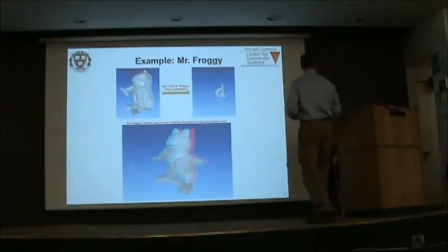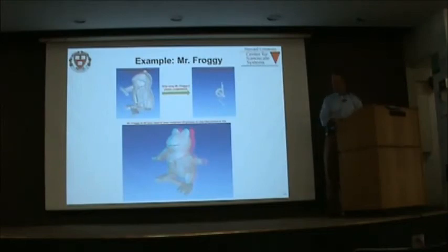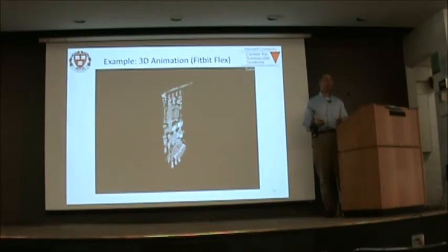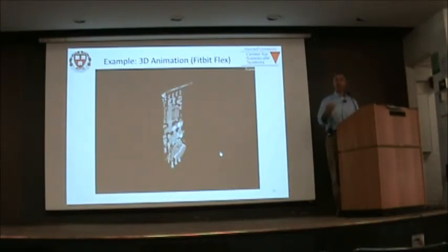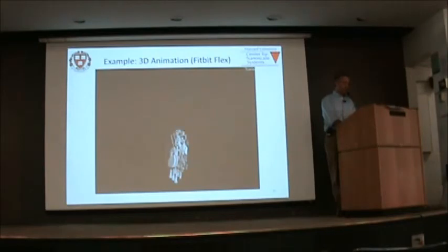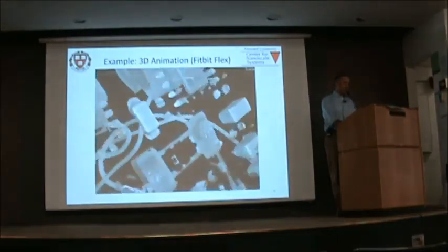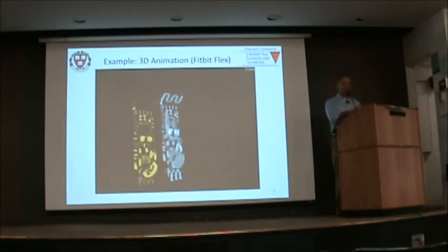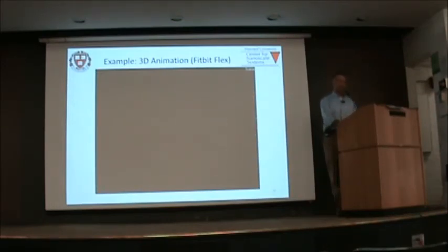And of course everybody asks: how can I make an animation? Here's one — the Fitbit Flex. You can use the same visualization and rendering software to create animations: rotate it, zoom in, see the individual wires, extract just the metal volume, and then put it back in. It's great for PowerPoint presentations.